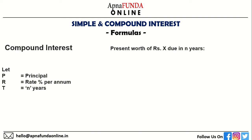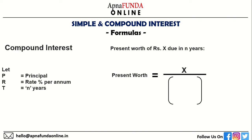Last formula: present worth of rupees X due in N years. Present worth is equal to X divided by 1 plus R by 100, whole to the power N. You will understand all of these formulas when we start solving questions from our next video.